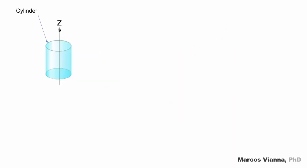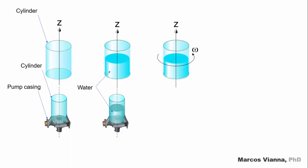To explain how they work, let's imagine this cylinder and a pump casing under it. Now, let us put some water inside the cylinder and inside the casing too. And now, let us put the cylinder to rotate about its vertical axis. See what happens. The surface of the water will form a concave surface. It will go down at the center and it will go up at the edges.